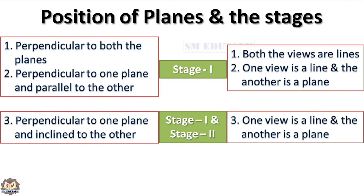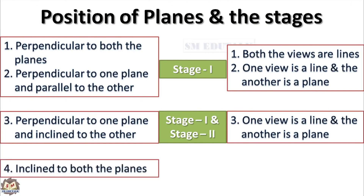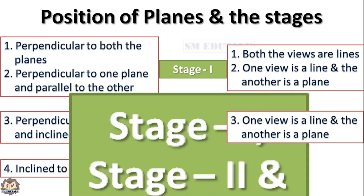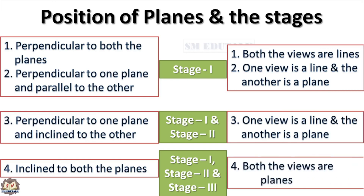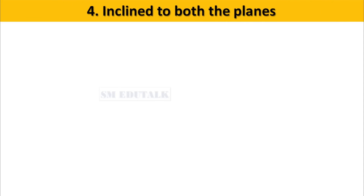Position of planes and the stages. In projection of planes, the fourth position of the plane is inclined to both the planes. It's not possible to imagine a plane when it is in this position. That's why we imagine the plane's position in three stages. In stage 1, imagine the plane in simple position. In stage 2, imagine the plane inclined to one plane. In stage 3, imagine the plane inclined to the other plane. In stage 3, the plane is in the desired position and its both views appear as planes irrespective of its shape.